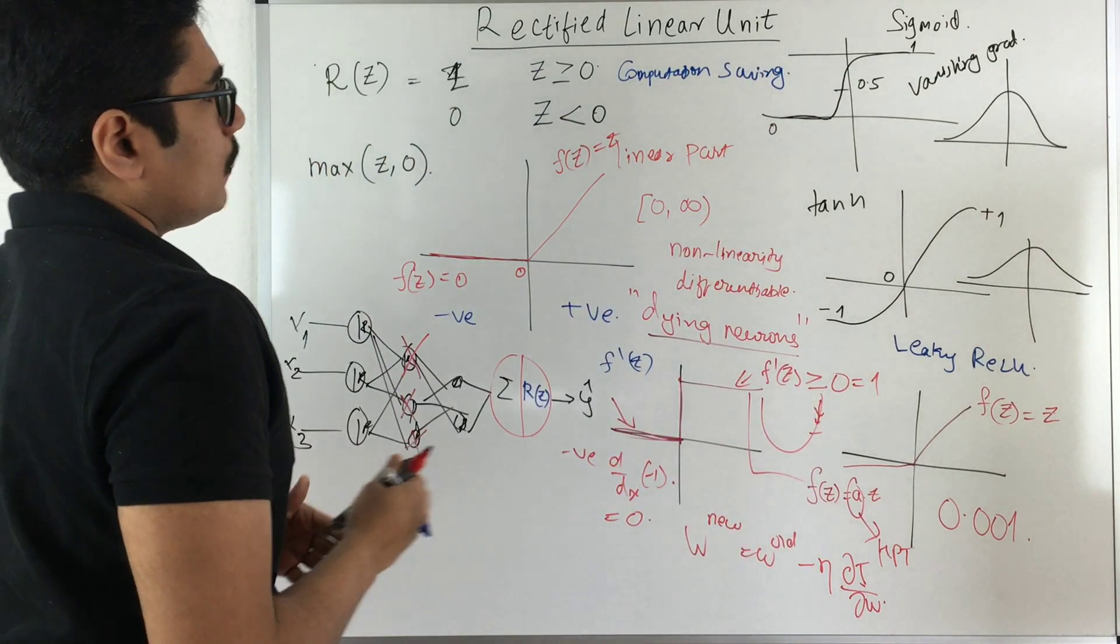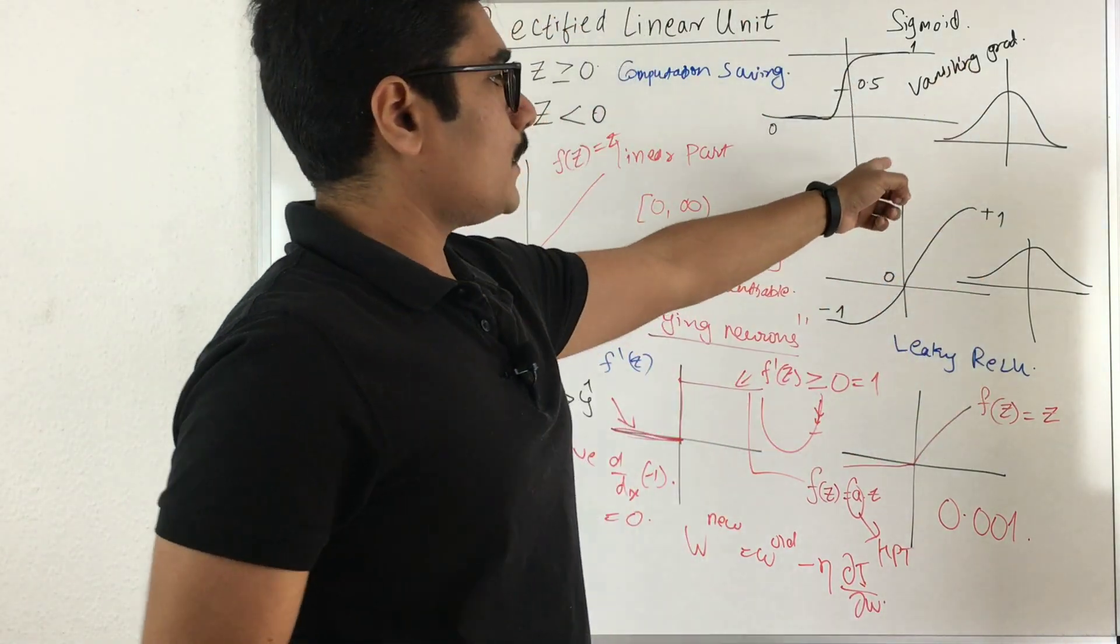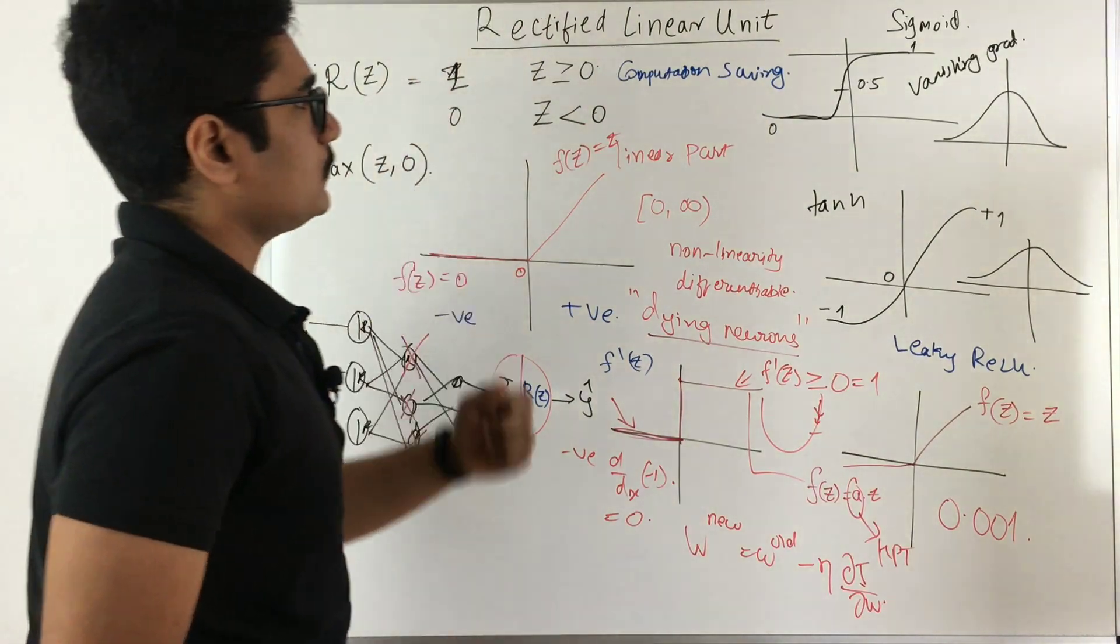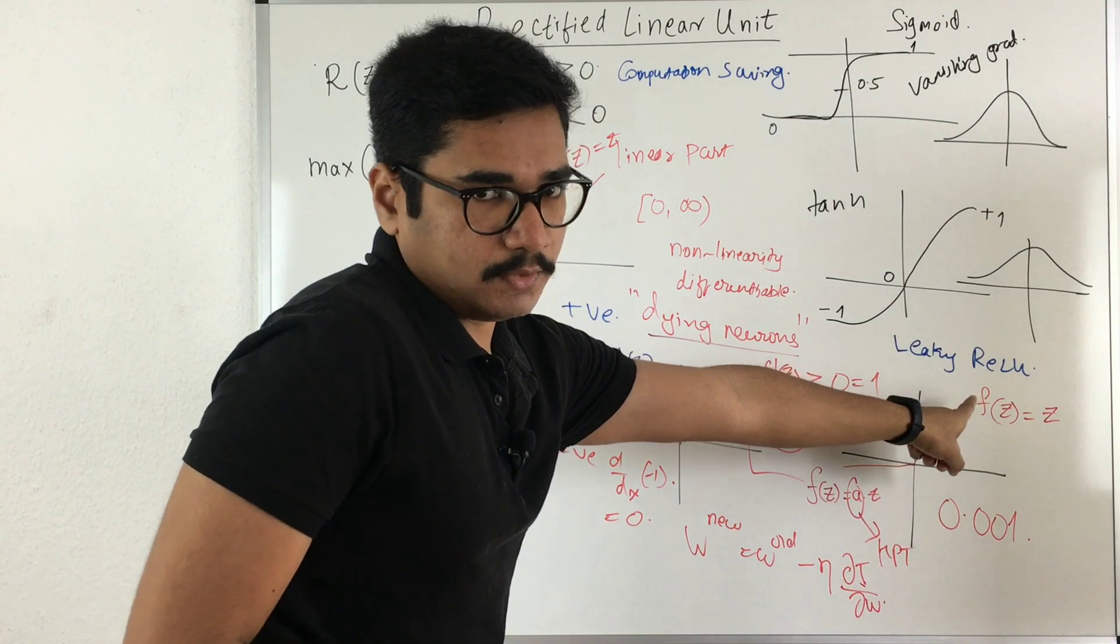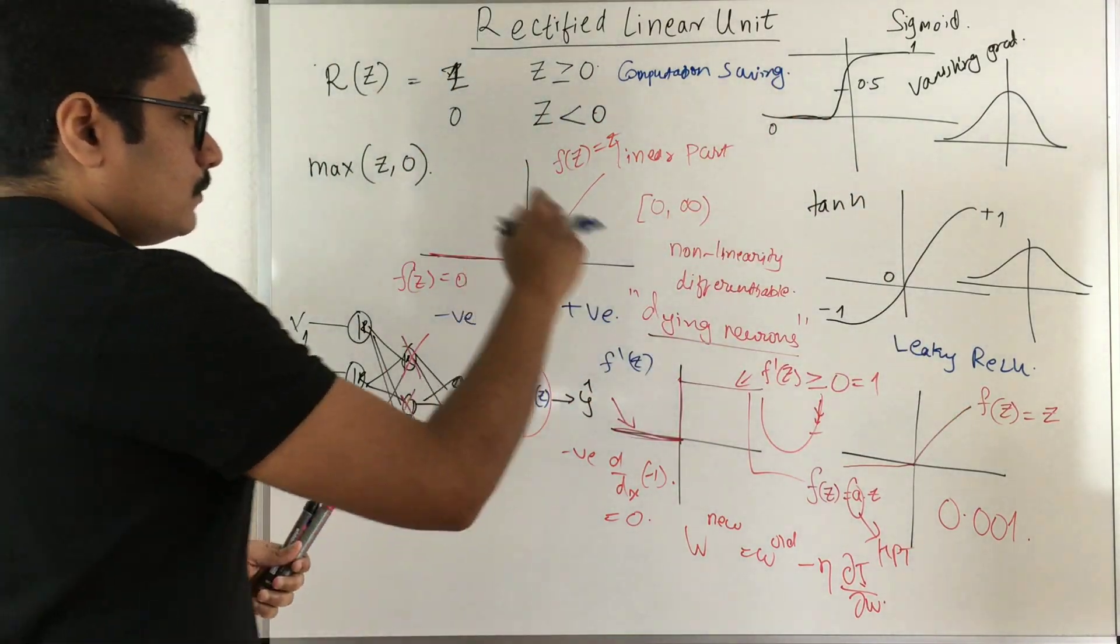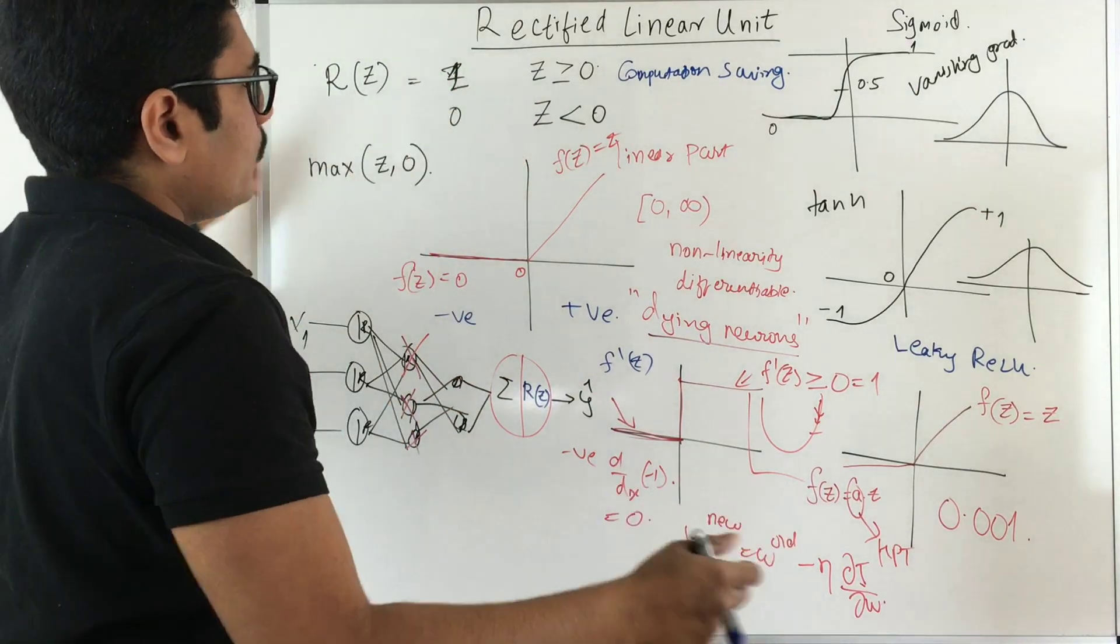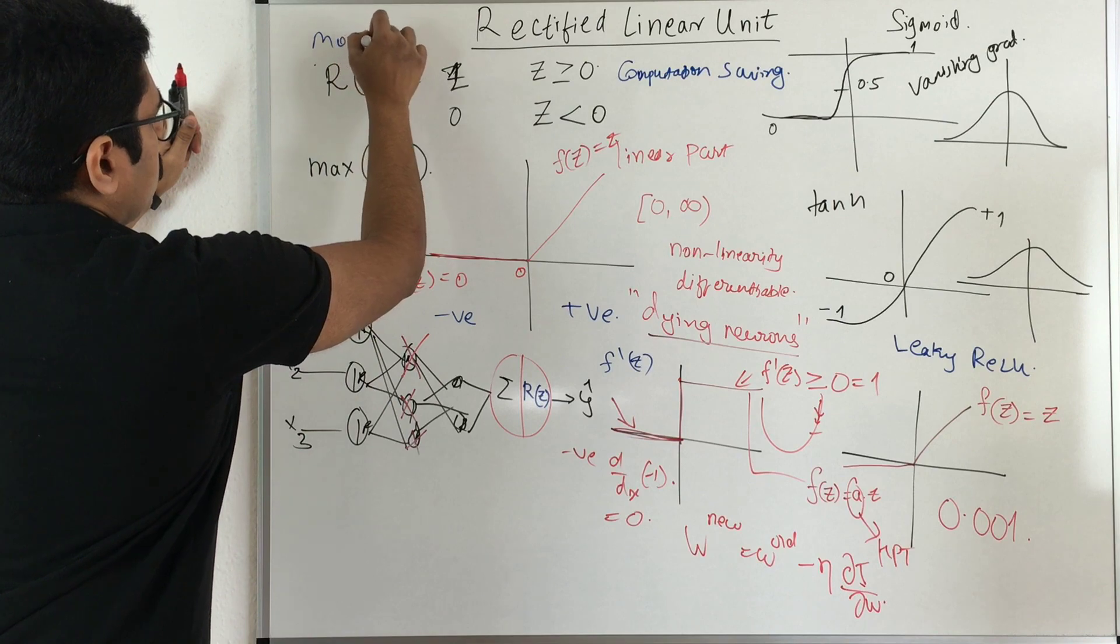So if you have your sigmoid or tanh then at some point of time at some instance they will fall prey to vanishing gradient, but this will essentially save you from having those. But if you are using this leaky version of this ReLU then you can just come out of this. So this particular ReLU function, its derivative, that is first order derivative, both are monotonic functions.